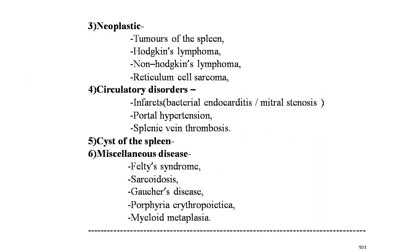The third reason for splenomegaly is neoplastic — tumors of the spleen, Hodgkin's lymphoma, non-Hodgkin's lymphoma, and reticulum cell sarcoma. Fourth is circulatory disorders like infarcts, bacterial endocarditis, mitral stenosis, portal hypertension, splenic vein thrombosis, and cysts of the spleen. Sixth, miscellaneous diseases: Felty's syndrome, sarcoidosis, Gaucher's disease, porphyria erythropoietica, and myeloid metaplasia.